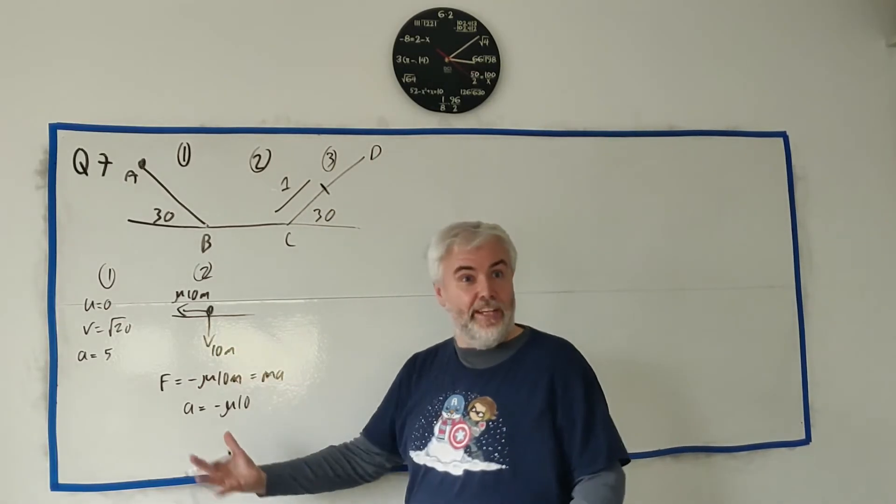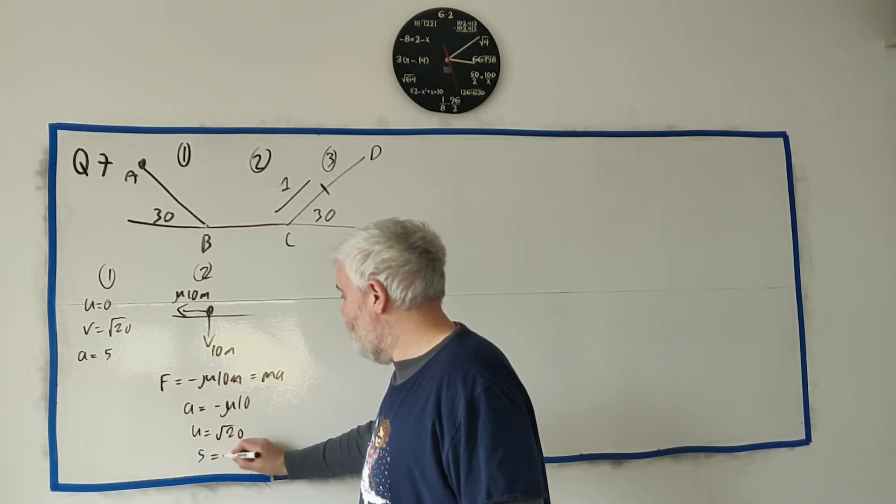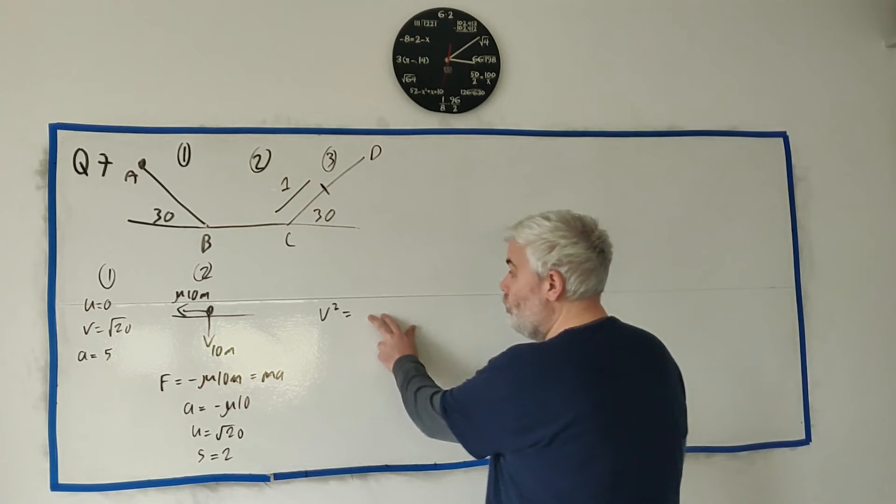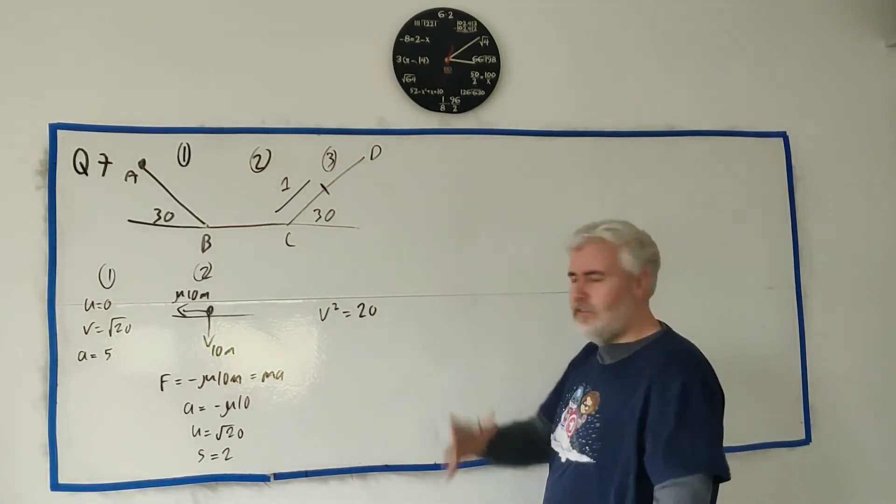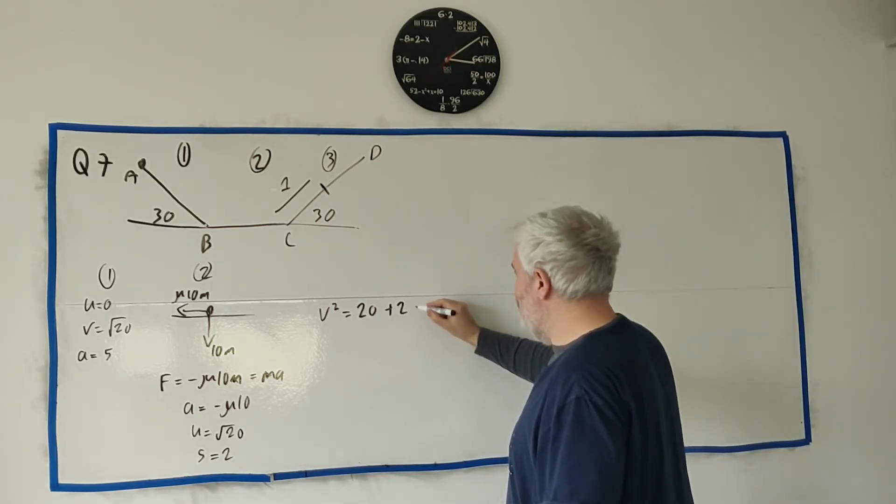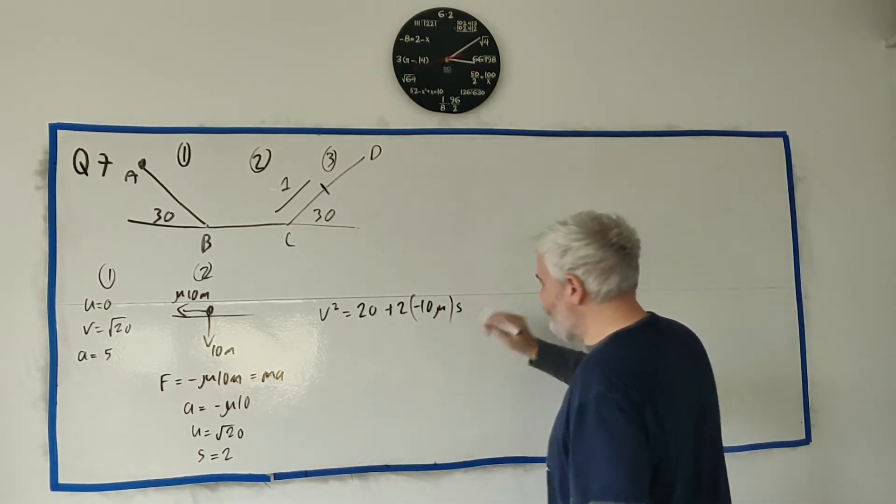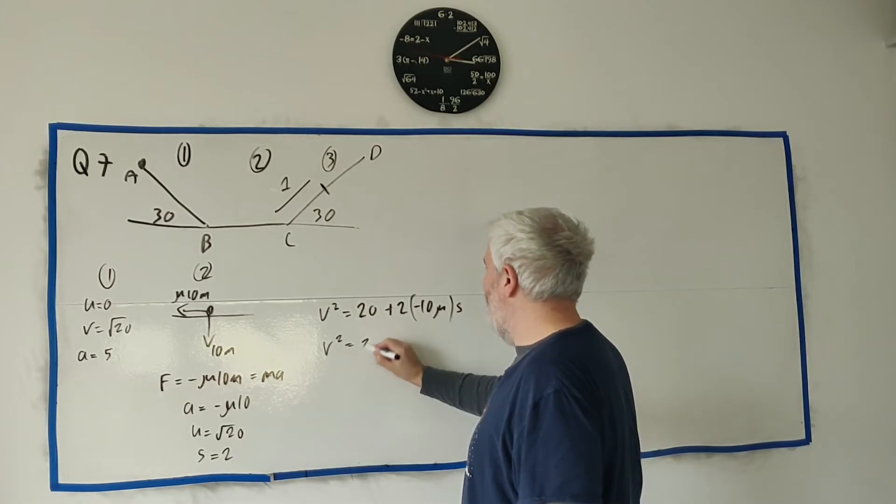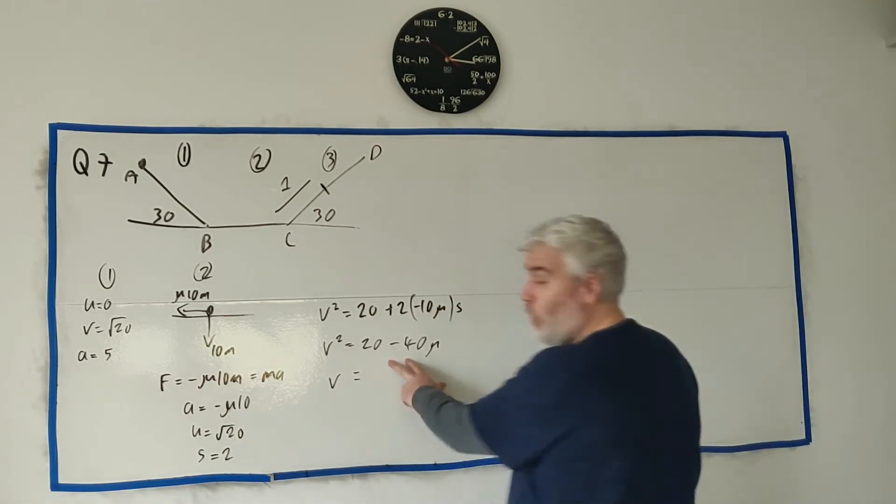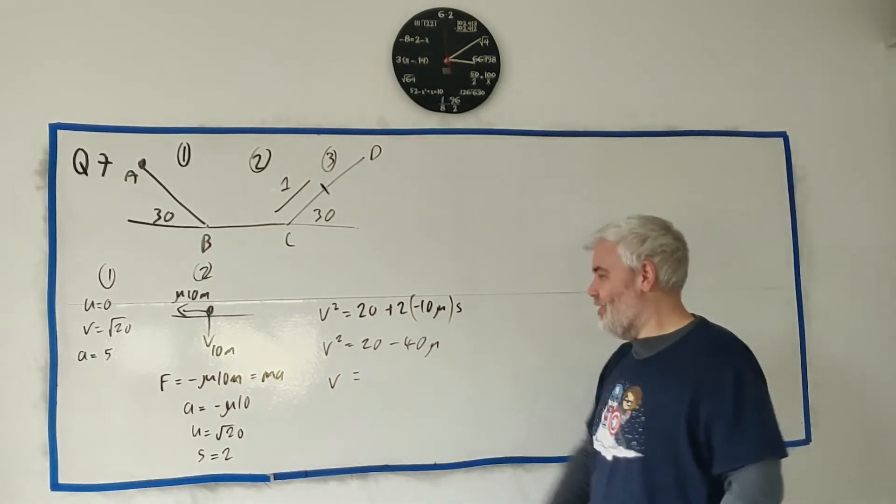We go ahead and try to find everything again. U equals √20, S equals 2. Just as always, we get V squared equals U squared 20 plus 2 times A. A is minus 10mu times S. We get V squared equals 20 minus 40mu, and V equals the square root of that. But we're going to end up squaring again so it doesn't matter. That's V. Let's go into the third world.